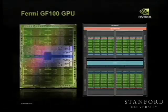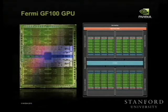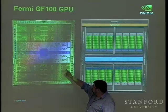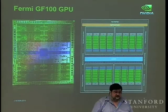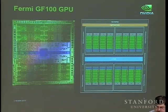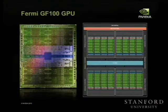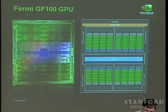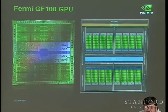Here's an overview of the product — a die photo in color. You can make out different parts of it, and I've put a rough block diagram to the right. These are what we call TPCs — texture processor clusters. There are a total of 16 of them in the chip. Each TPC contains one SM, the shader processor. In the middle of the chip we have a lot of fixed function logic, and also the central crossbar, which is pretty apparent in the design.